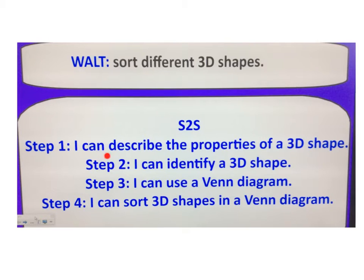So our steps to success: Step one, I can describe the properties of a 3D shape. Step two, I can identify a 3D shape. Step three, I can use a Venn diagram. And step four, I can sort 3D shapes in a Venn diagram.